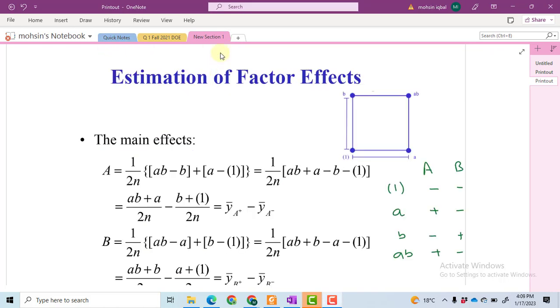Now we calculate the main effect of A. For this, we first calculate this term, which is known as the contrast of A. How do we calculate the contrast of A? We use this table again. We know that in these two terms, A and B, the A is at high level.